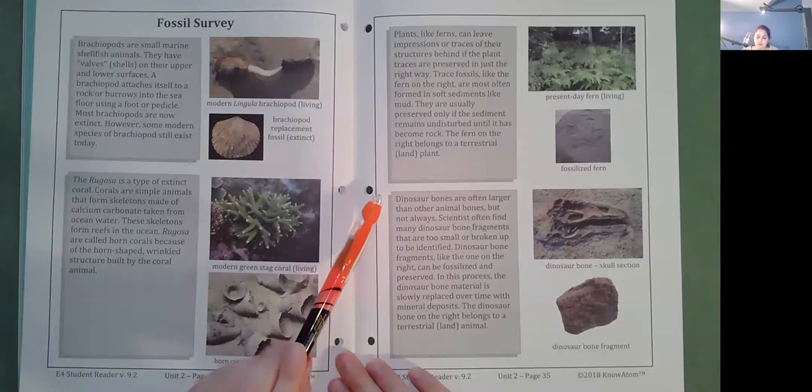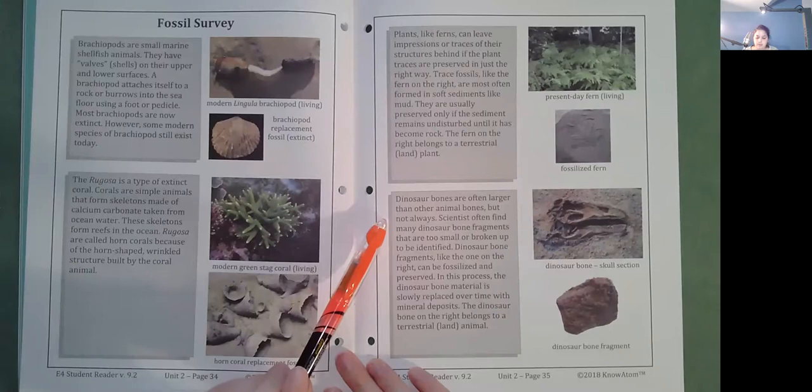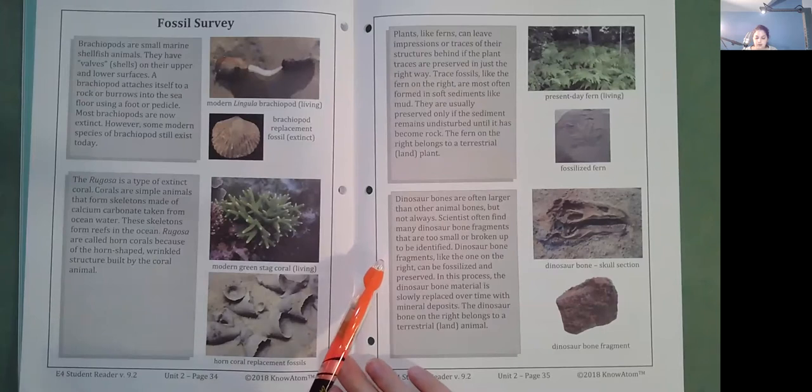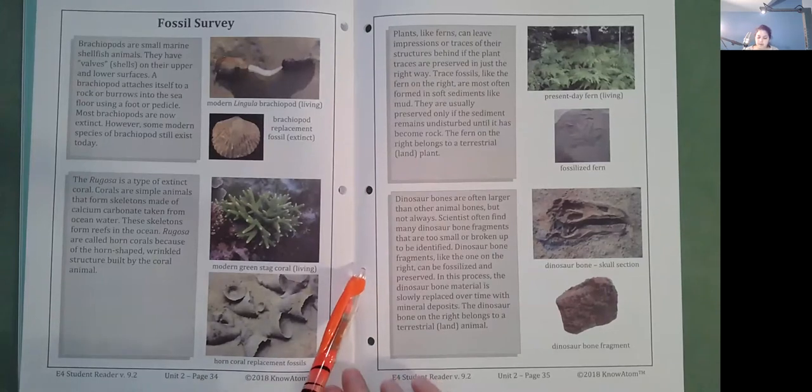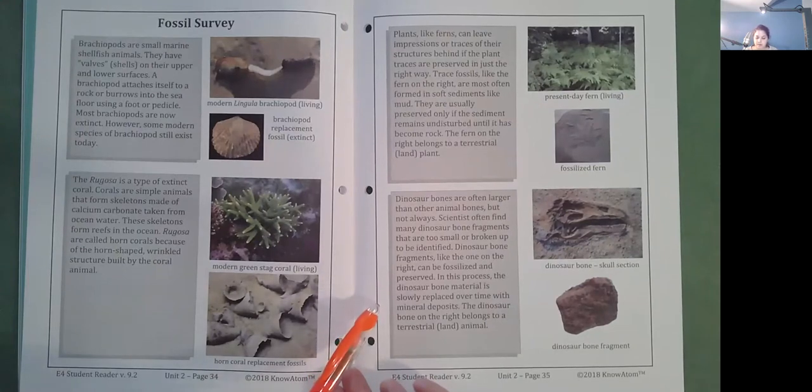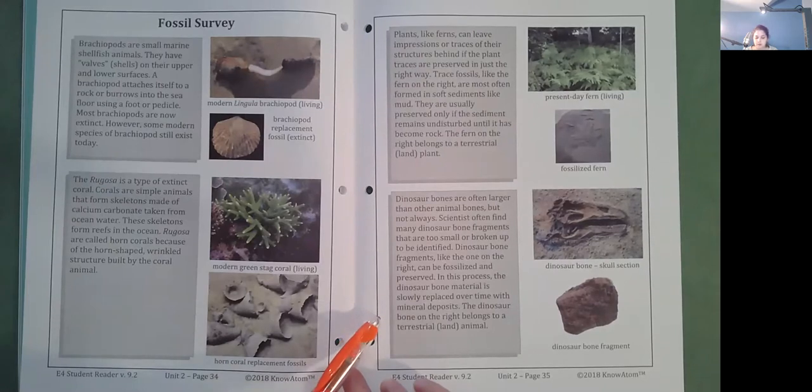Dinosaur bones are often larger than other animal bones, but not always. Scientists often find many dinosaur bone fragments that are too small or broken up to be identified. Dinosaur bone fragments, like the one on the right, can be fossilized and preserved. In this process, the dinosaur bone material is slowly replaced over time with mineral deposits. The dinosaur bone on the right belongs to a terrestrial or land animal.